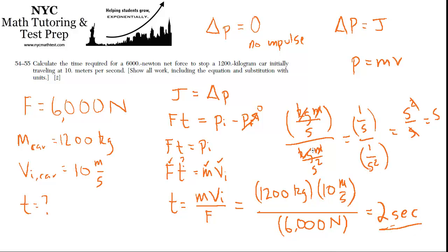And that's how long it takes - 2 seconds. And you can check that too. If you want to just go back to here, then 2 seconds times 6,000 newtons is 12,000, and then the right side is MV, which is 1,200 times 10, which is 12,000 as well. So that's the gut check. And that's a momentum and impulse problem.